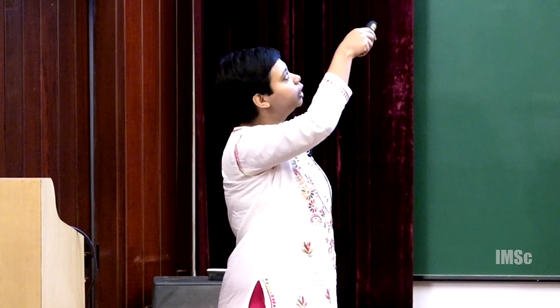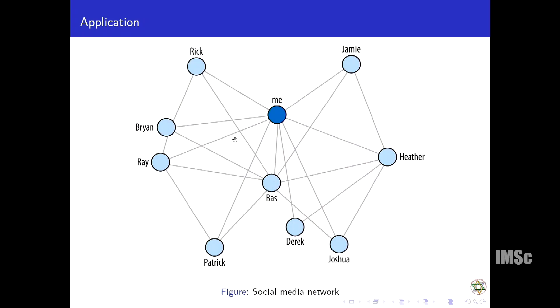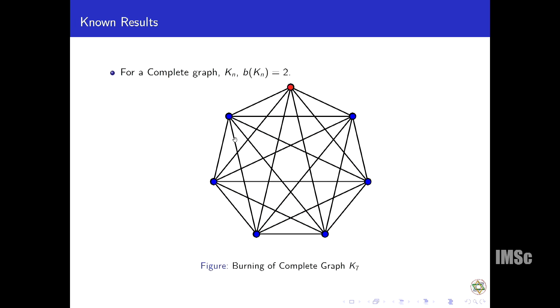Let's look at the application. This graph burning problem is used to model the spread of information. You put fire or put some messages there and how it will spread. Suppose there is a meme and I am sharing it through my social media like Facebook, Twitter. My friends will see it, then they will share it, and in this way a post gets viral. This problem is used to model this kind of things.